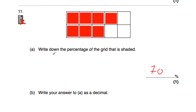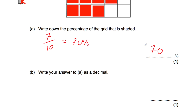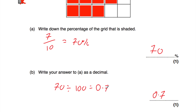You could write it as the fraction 7 tenths first, and 7 tenths equals 70%. For Part B, we need to write our answer to Part A as a decimal number. 70% is 0.7 — it's useful to know those off by heart. But if you've forgotten, take 70 and divide by 100, moving the digits two columns to the right. The 7 in the tens moves into the units and again into the tenths, so it'll be 0.7.